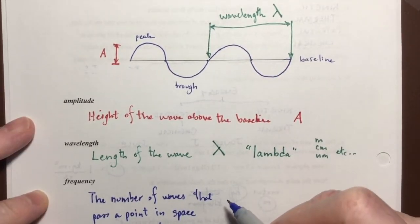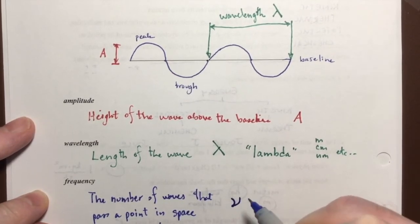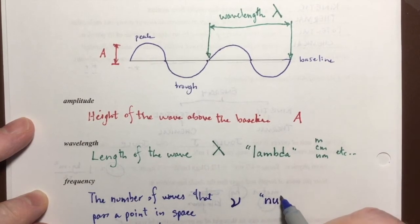So frequency is represented by two symbols. One is, it looks like an italic V, kind of a swoopy V, like it's running. And that is called nu. That is the Greek letter nu. And that stands for frequency.